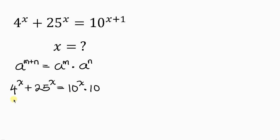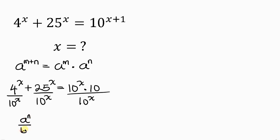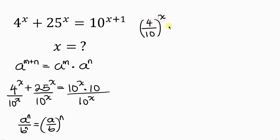Now let's divide through by 10 to the power of x. Using the index rule that a to the power of n over b to the power of n equals (a/b) to the power of n, this becomes (4/10) all raised to the power of x plus (25/10) all raised to the power of x, and this is equal to 10, since the 10 to the power of x cancels out.